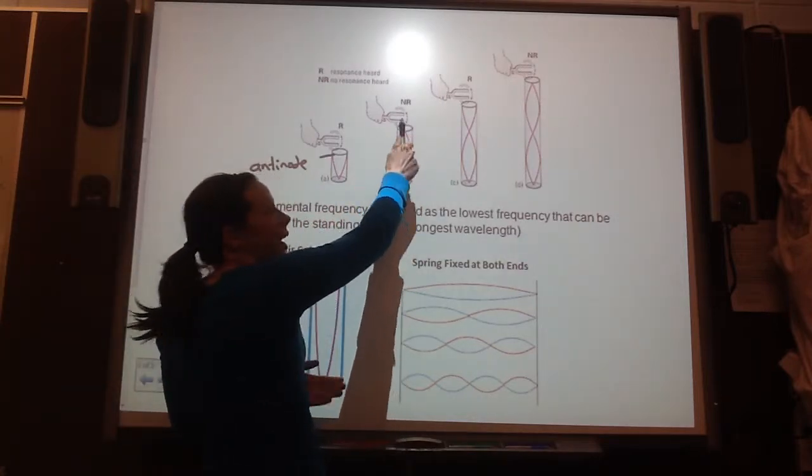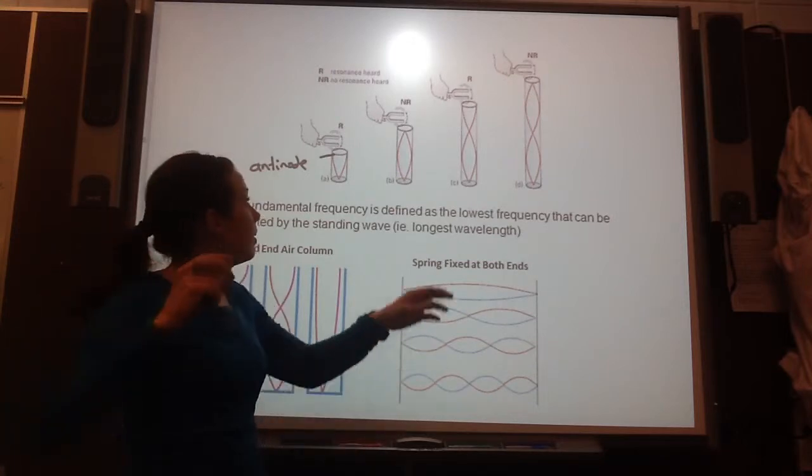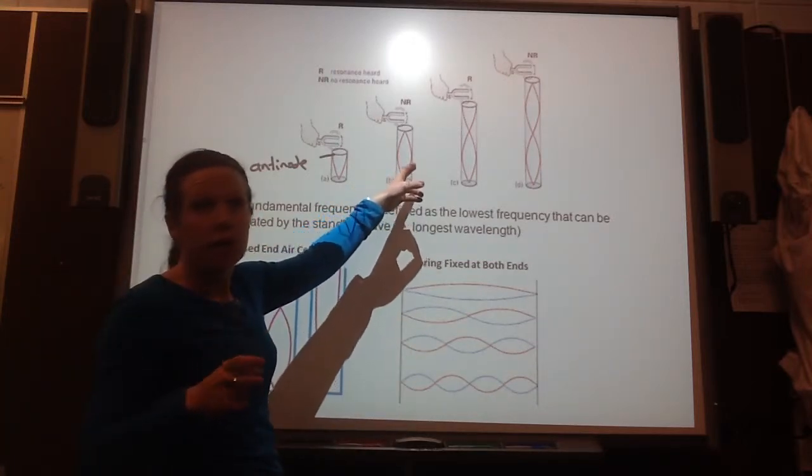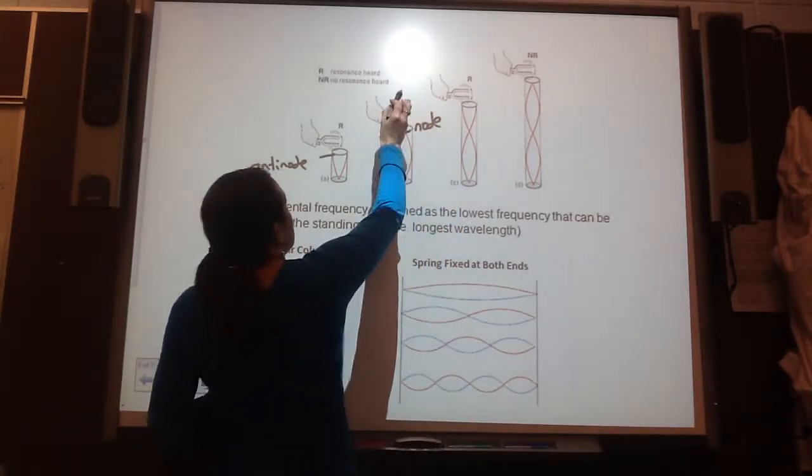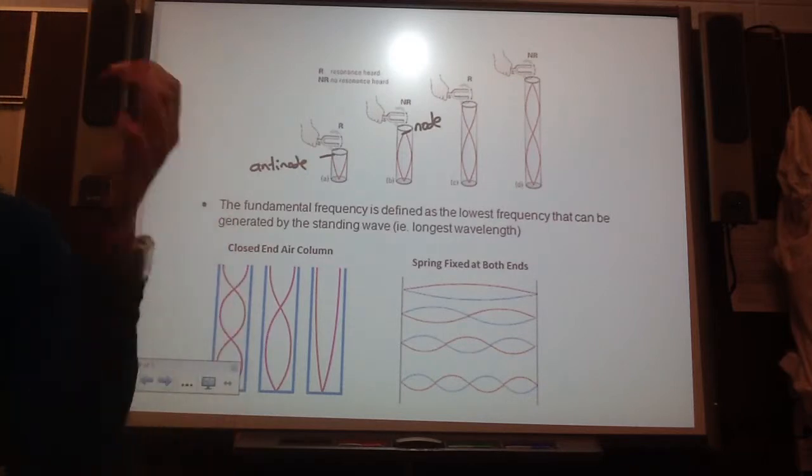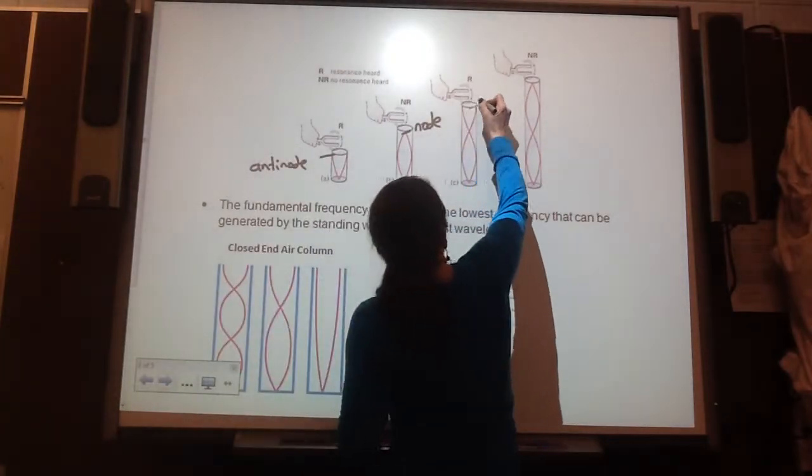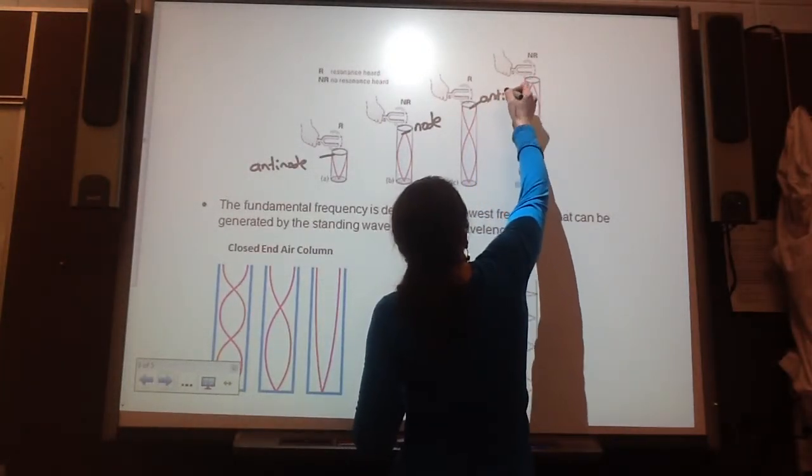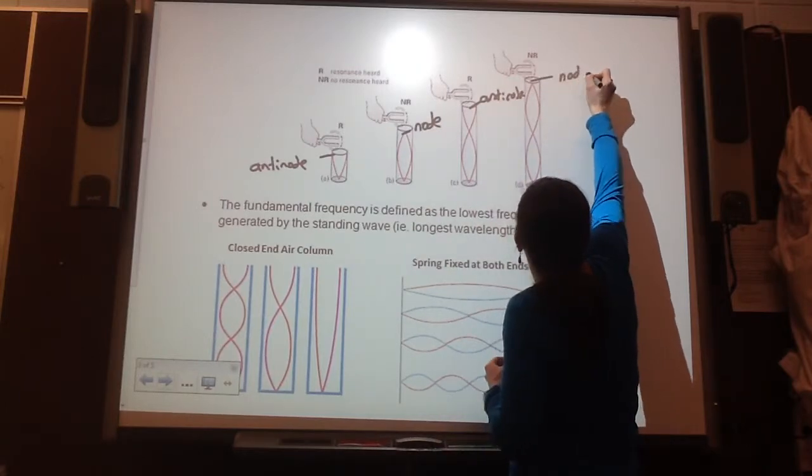But if, say, I rang the same frequency tuning fork over a different column, and this is where the node is, there will be no resonance heard. You'll still hear something, but it won't be the loudest sound. Here, this is the antinode, so you have resonance. Again. And here is another node. So no resonance.